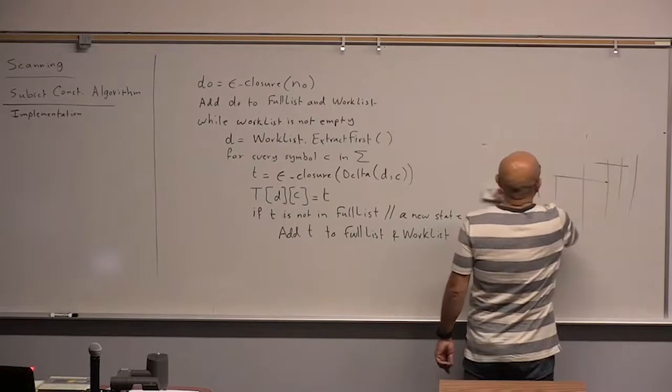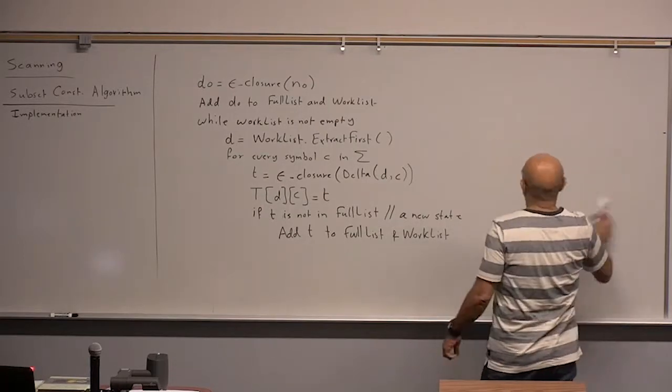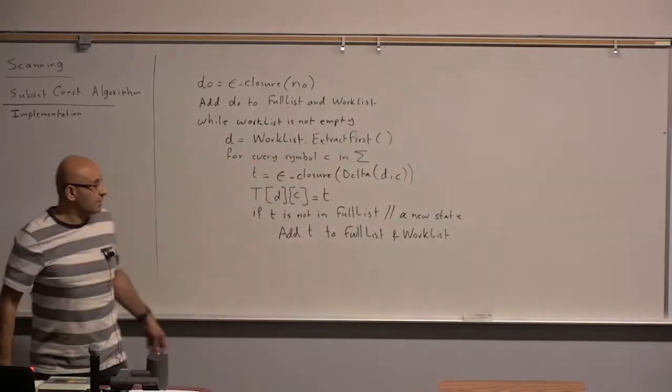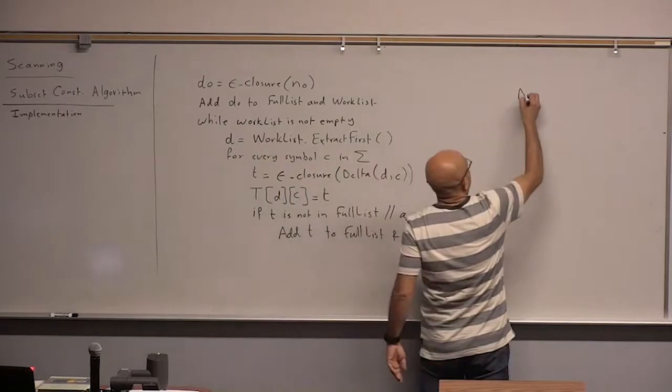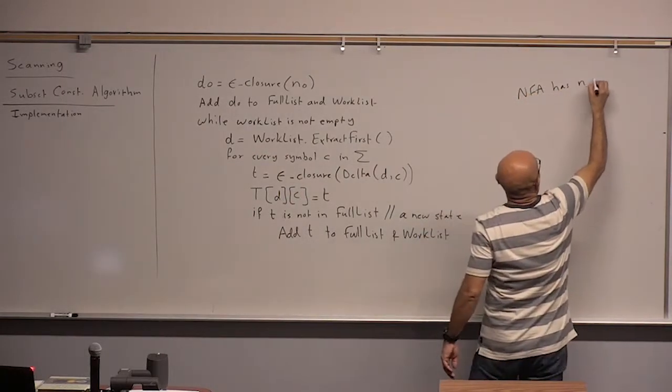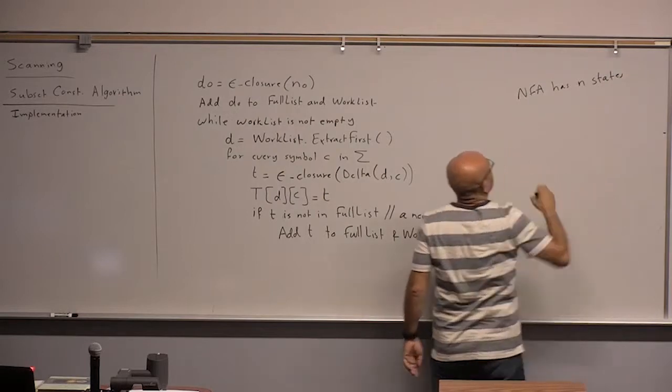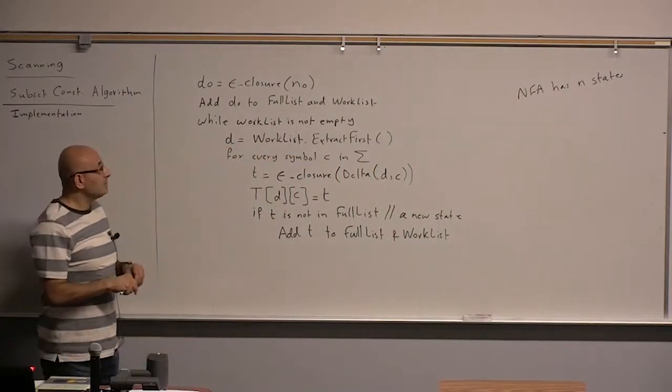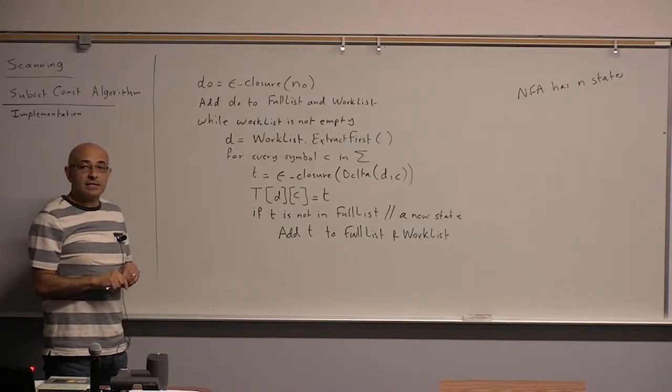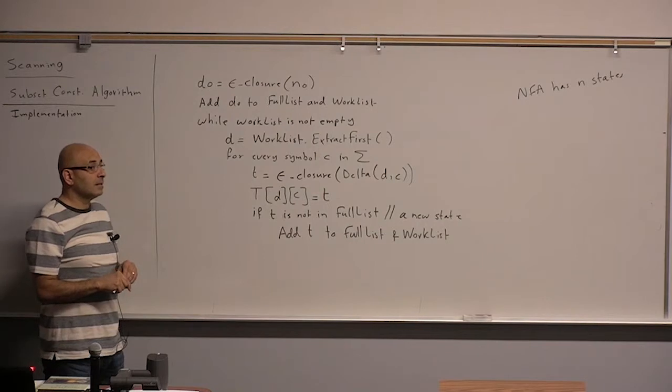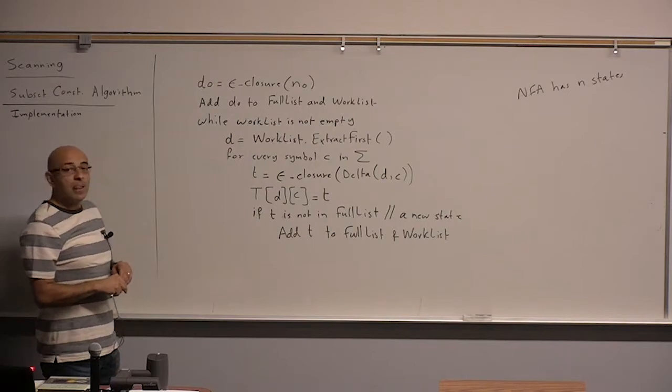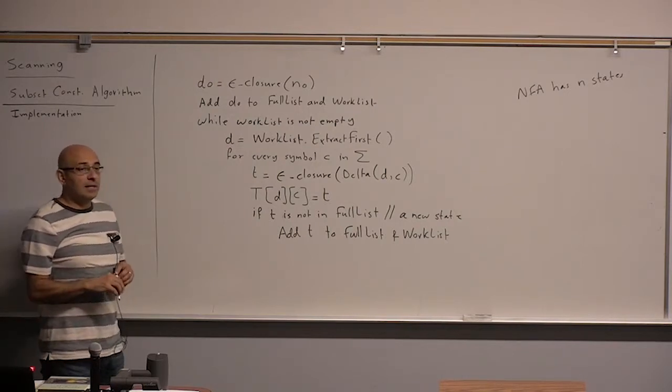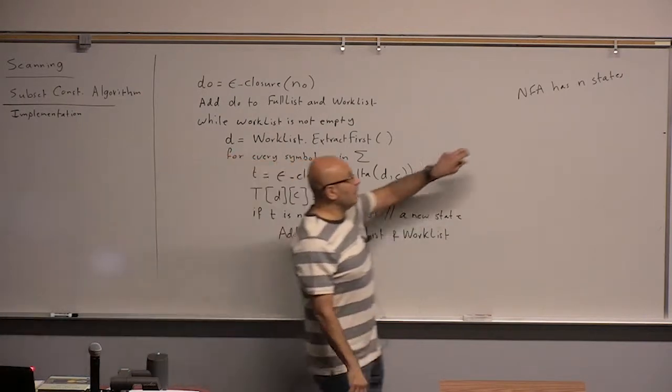Okay, so now what's the asymptotic complexity of this algorithm? Assuming that the NFA has n states. NFA has n states. I guess worst case if you go to n squared. N squared. Any other answers? N times s, where s is the symbols. Symbol count. So why is it n times s?